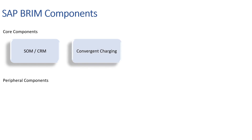The second component is SAP Convergent Charging, also known as SAP CC. It is not an SAP module — it is an external Java-based application which is used to handle complex pricing scenarios.